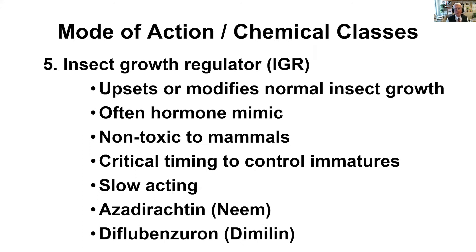There's a fifth class of chemicals called insect growth regulators. These are chemicals that, when applied to an insect, interrupt or disrupt the normal growth and function of the body. Mostly these mimic hormones that the insects already have, which makes them non-toxic to mammals. But in order to successfully use an insect growth regulator, you have to critically time the application so that it goes on to the immature stage — adult insects don't grow. A couple that you're familiar with are azadirachtin, sold under the trade names Neem and NeemX, and the insecticide diflubenzuron.